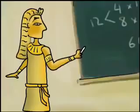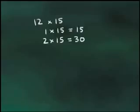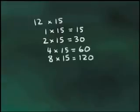Ancient Egyptians relied on a doubling procedure until they produced enough groups, then they added these groups to find the answer.